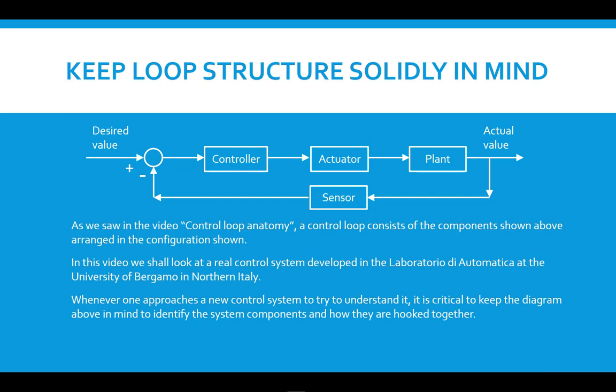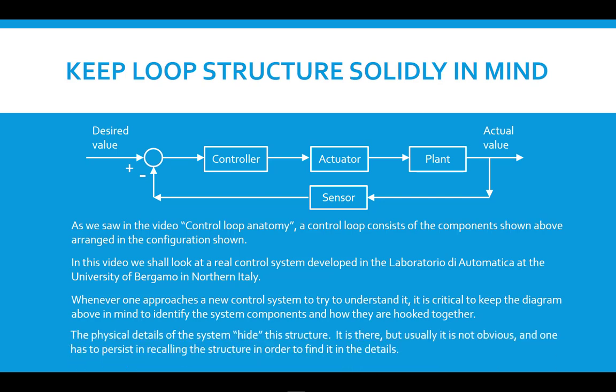One problem that will become somewhat evident here is that when you go look at a real system, the system is not arranged nicely in this diagram. Often there's a lot of wires, motors, sensors, etc., and one has to sort out the parts and pieces. So what you need to do is have this diagram firmly in mind when you go look at a new system. The physical details of the system hide this structure, not intentionally—it's just the way that it works out. But you need to keep this loop structure in mind and sort of impose it on the system.